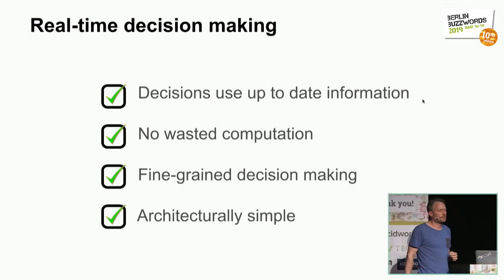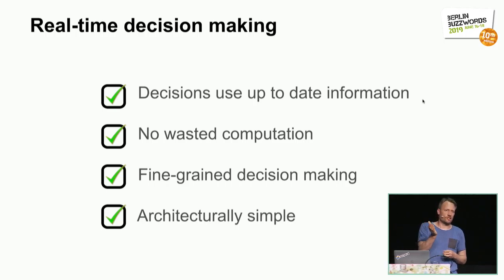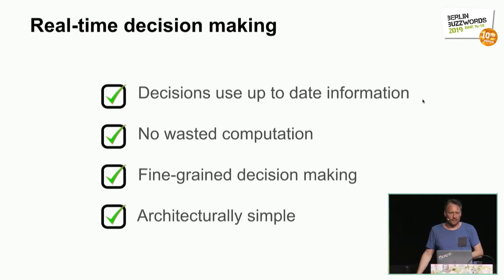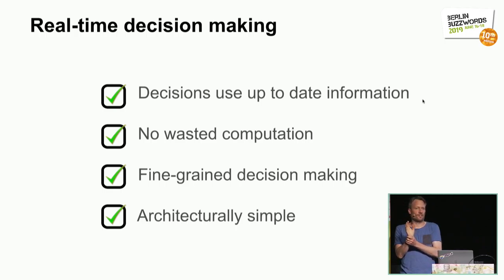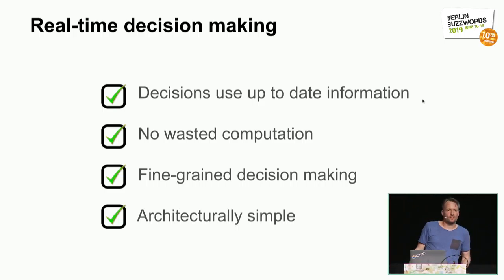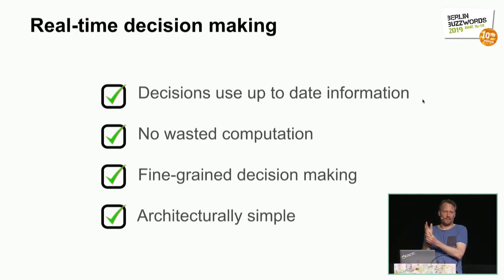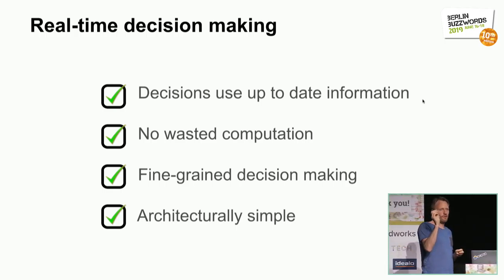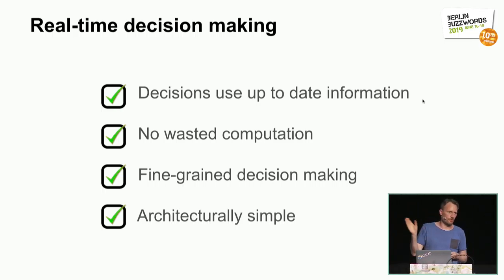There are many good reasons to defer decision-making until the user actually needs it. First, you can use all the up-to-date information you have about the user and the data. Second, you don't waste computation, because you never eagerly compute something you're not going to need. For that same reason, your decision-making can be much more fine-grained. In the movie example, you can move from recommending lists to adults or tech-interested people to creating a separate list for every single user — something that would be too expensive if done eagerly up front.